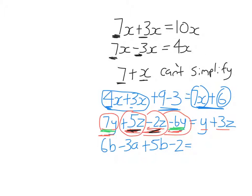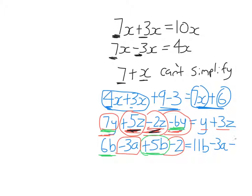Let's look at simplifying this expression, which has 4 terms. Look for like terms: 6b and positive 5b are like terms, so 6b plus 5b is 11b. The other two terms, minus 3a and minus 2, are lonely — they don't have any like terms. When that happens, we can't ignore them, we just leave them. So minus 3a stays as it is, and negative 2 stays as it is. You can't simplify this expression any further. It has 3 terms and none of them are like terms.